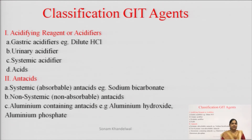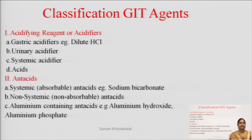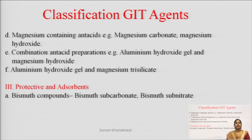Second is antacids. Antacids hamare divided hain on the basis ki yeh systemic hain ya phir non-systemic hain. First is systemic antacids — iska example hai sodium bicarbonate. Second is non-systemic antacids. Third is aluminium-containing antacids — iska example hai aluminium hydroxide aur aluminium phosphate. Next category is magnesium-containing antacids, jaise ki magnesium carbonate, magnesium hydroxide. Iske alawa combination antacids bhi hote hain, which contains both aluminium as well as magnesium — iska example hai aluminium hydroxide gel, magnesium hydroxide, as well as magnesium trisilicate.